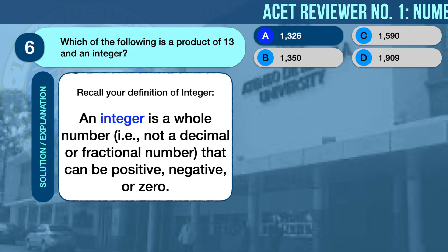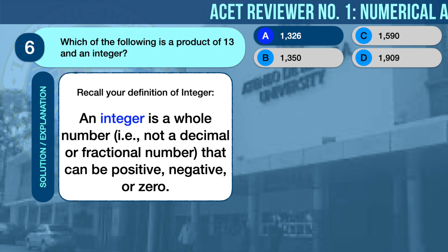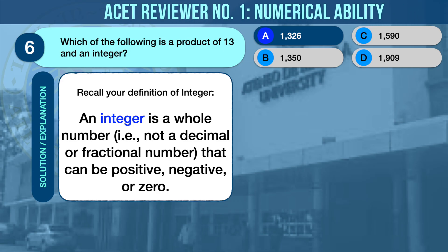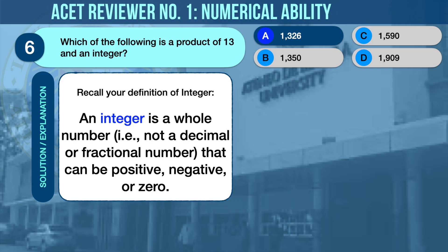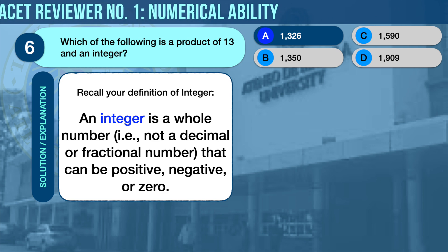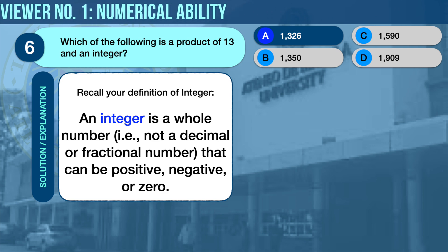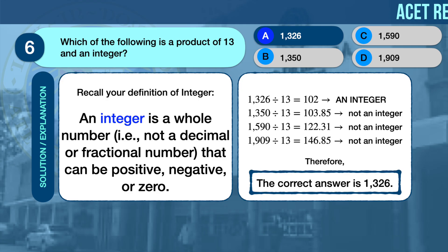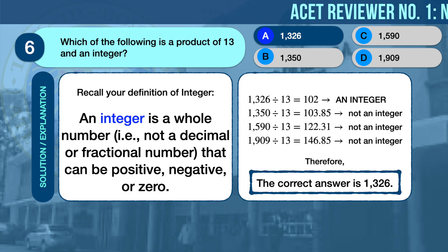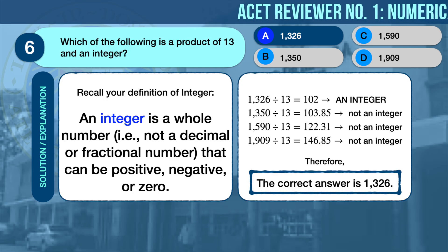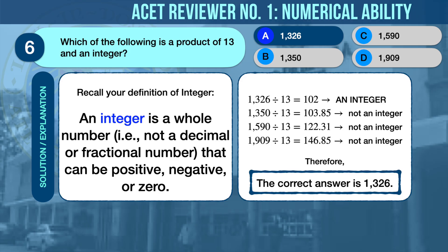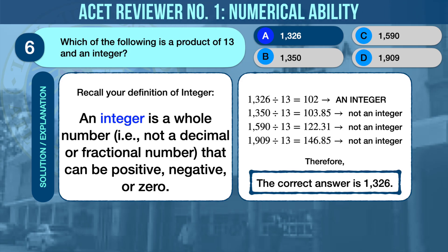The correct answer is A, 1,326. Recall that an integer is a whole number — not a decimal or fractional number — that can be positive, negative, or zero. To find the correct answer, we divide each of the given answer choices by 13. 1,326 is the only choice which, when divided by 13, results in an integer.